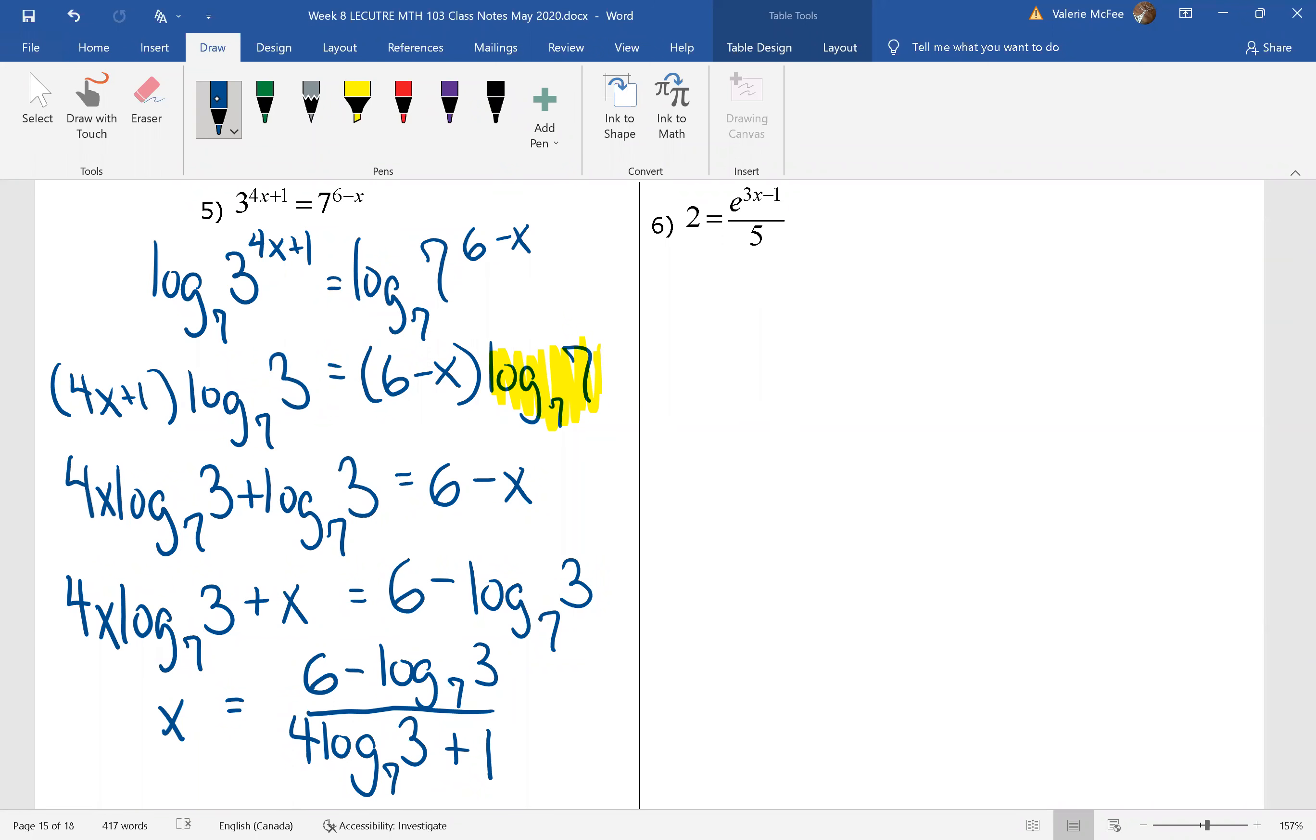So on the left, x is common and we divided both sides by that factor for log base seven of three plus one.